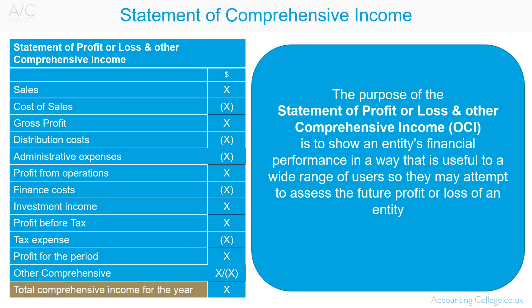The purpose of the statement of profit or loss and other comprehensive income is to show an entity's financial performance in a way that is useful to a wide range of users, so that they may attempt to assess the future profit or loss of an entity. As per the conceptual framework, the statement of profit and loss and other comprehensive income should be classified and aggregated in a manner that makes it understandable and comparable.